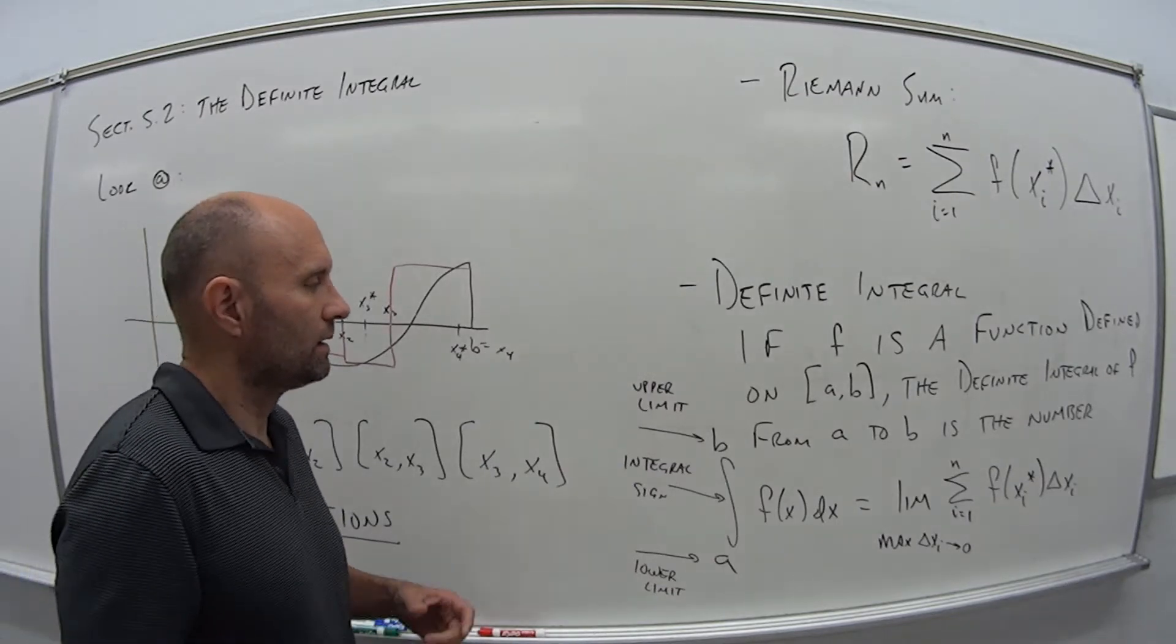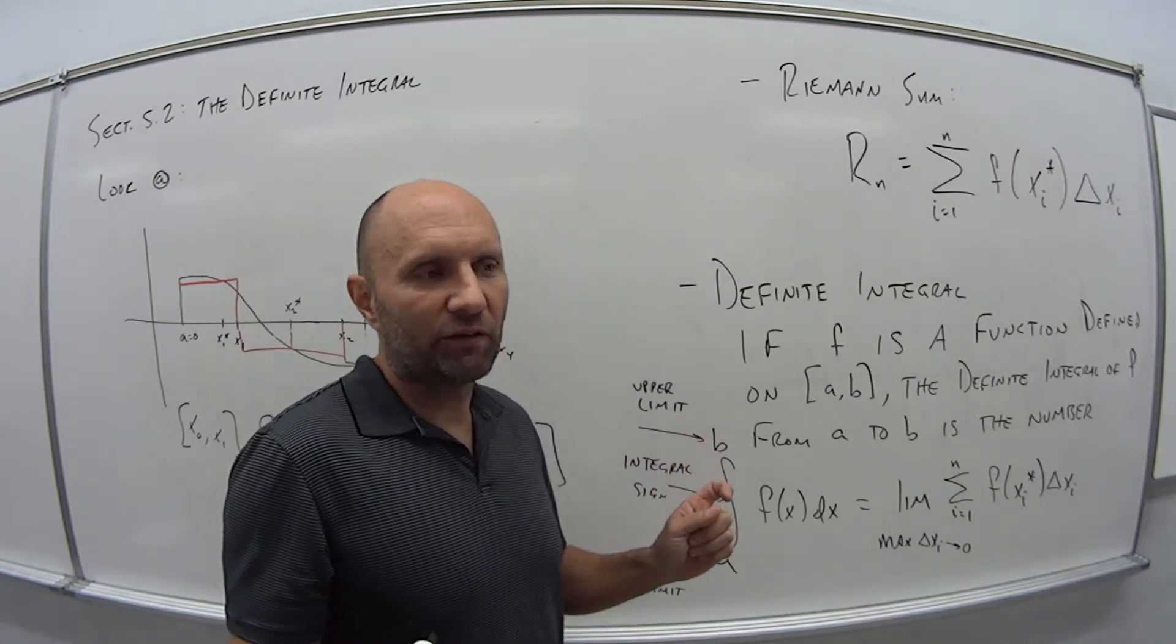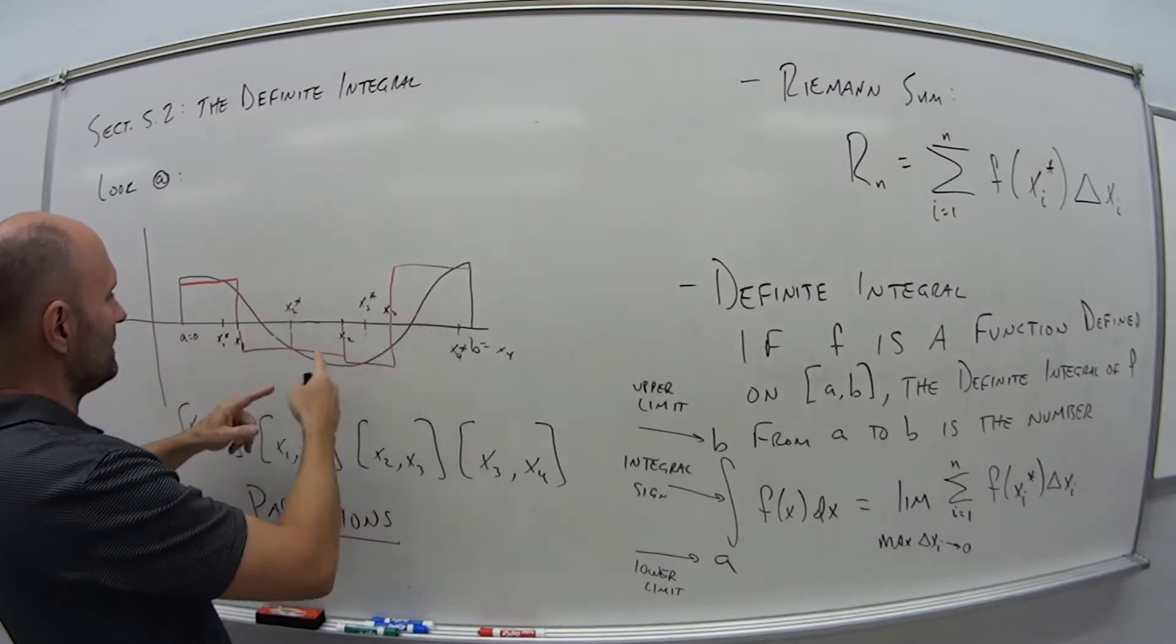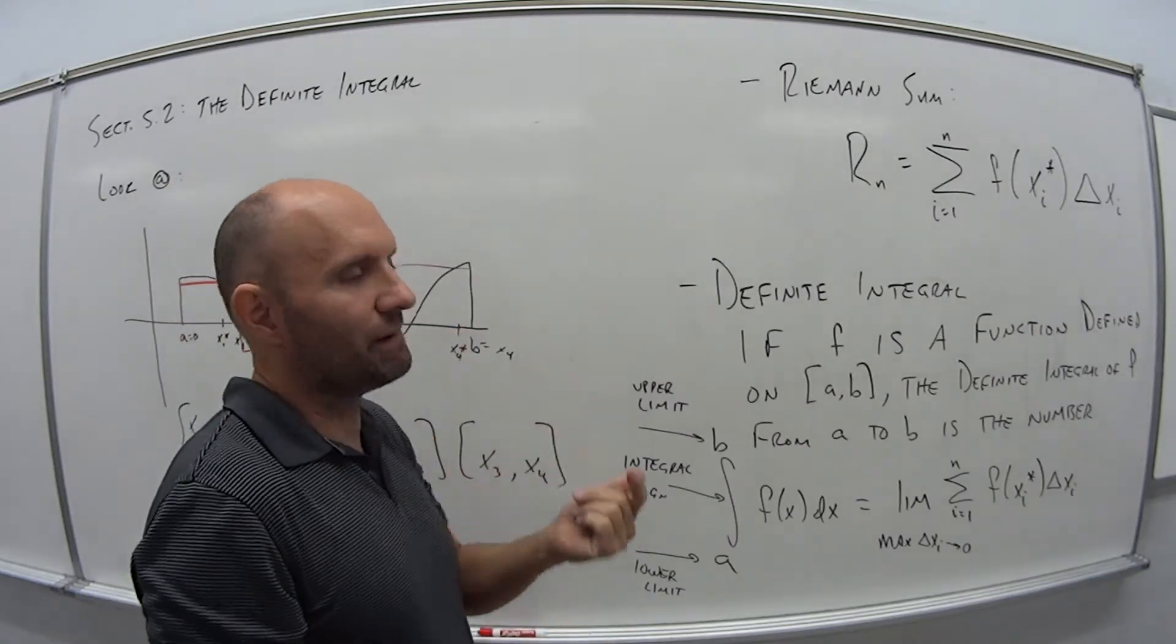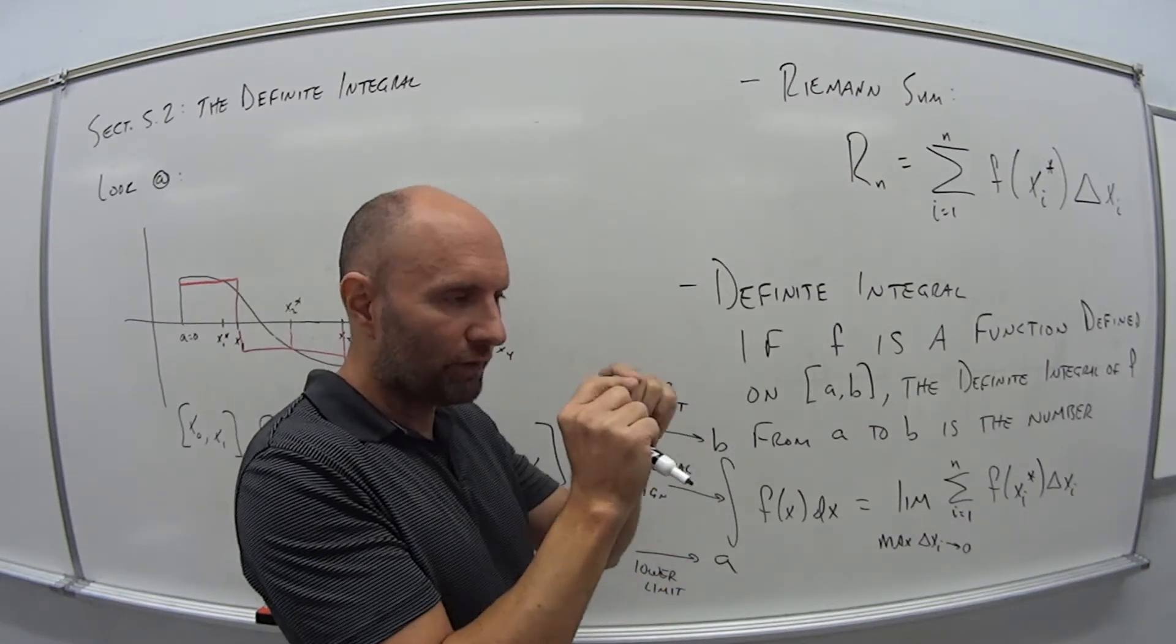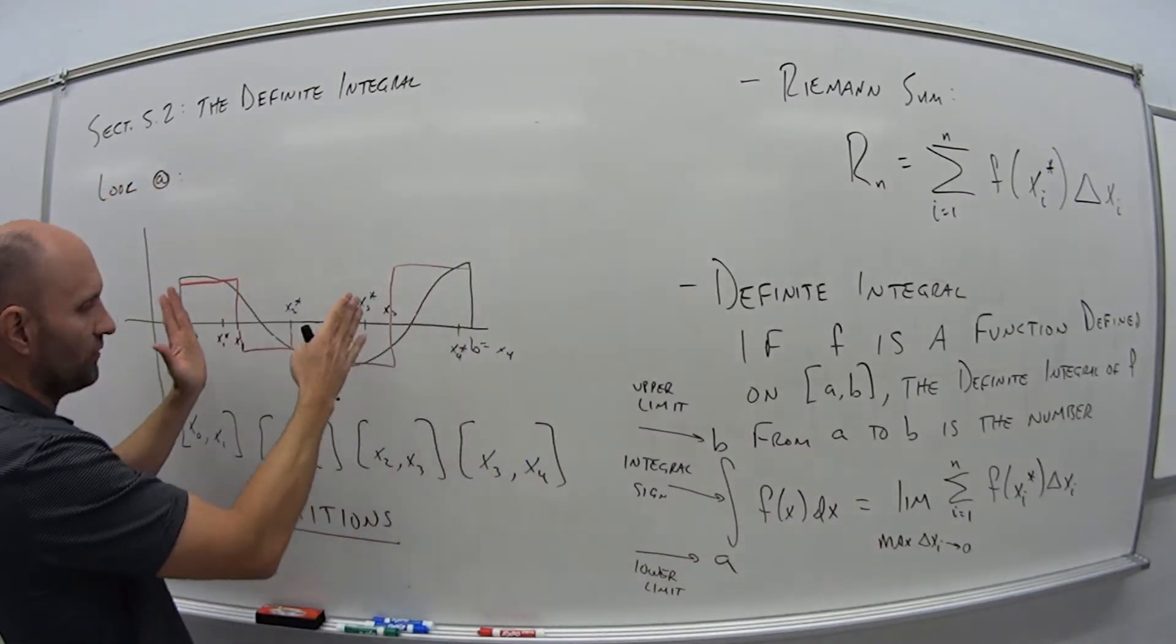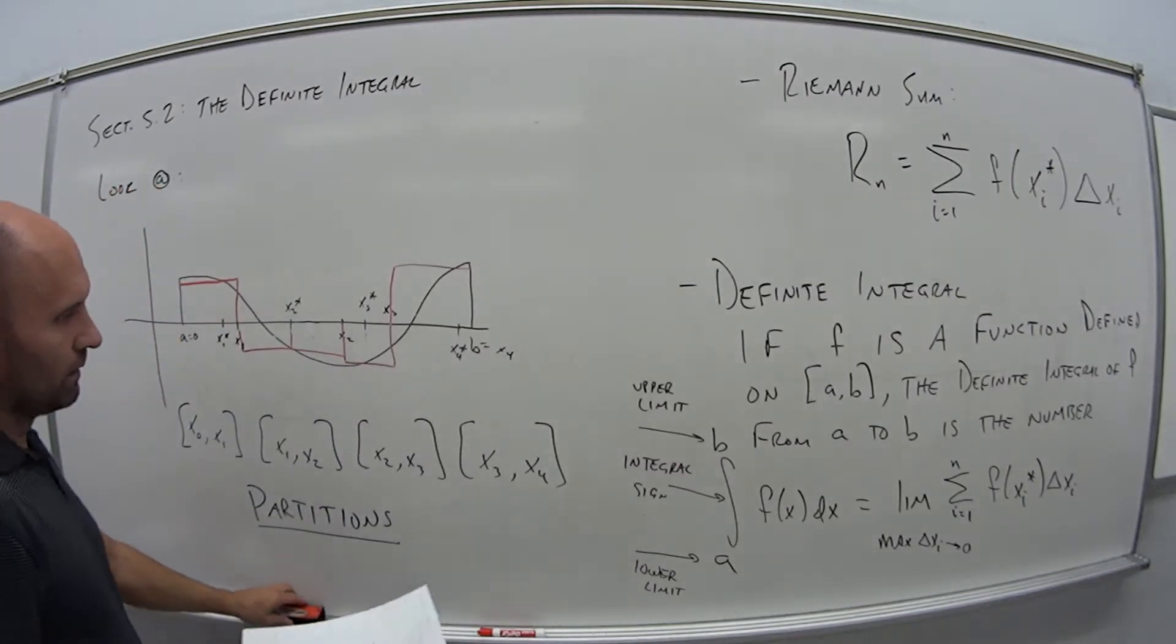So what does this mean? We essentially, so before, like in section 5-1, we had all these equal size intervals, and we made them as small as possible. It's the same idea here. So the intervals don't necessarily have to be the same. But ideally, our max interval that we choose goes to 0. So basically, as before, it becomes like a straight line. It becomes so small that the error between the curve and the top of the rectangle is basically 0. So the integral is just the Riemann sum when this max interval distance goes to 0. It becomes as small as possible.